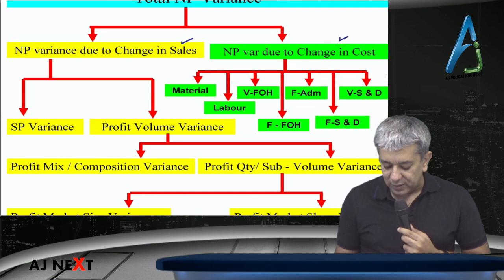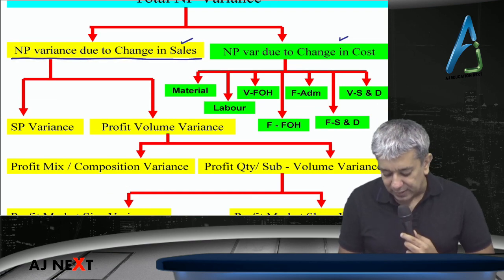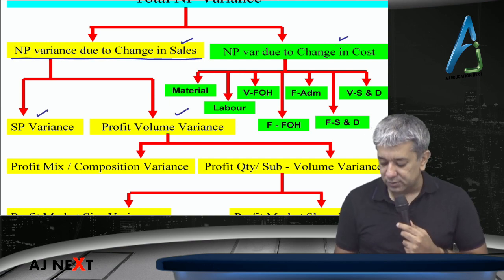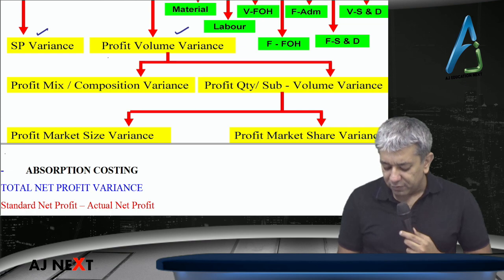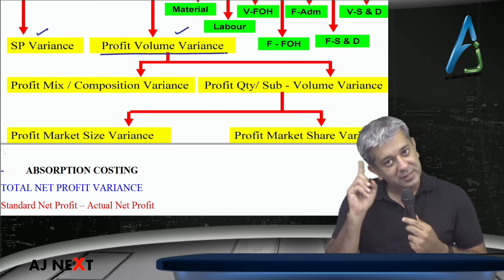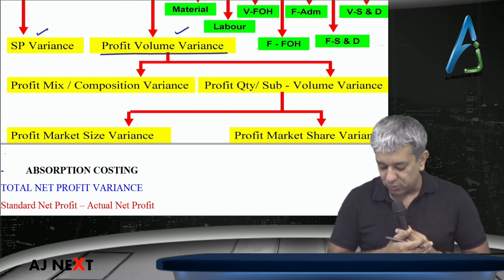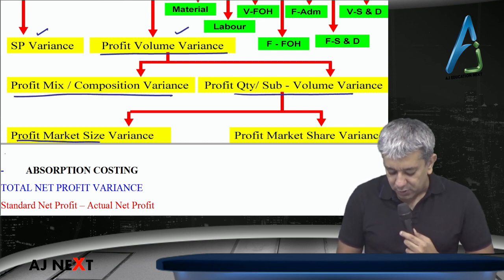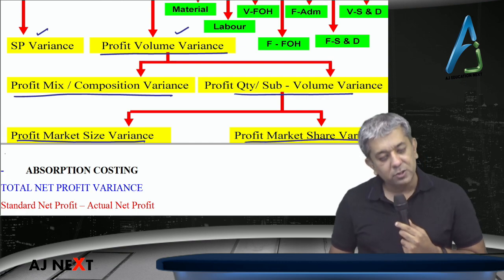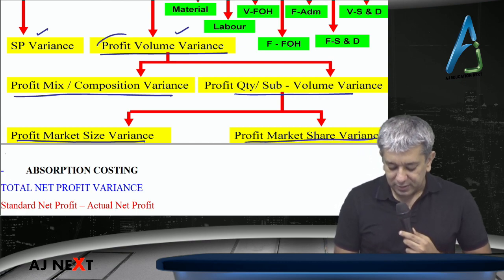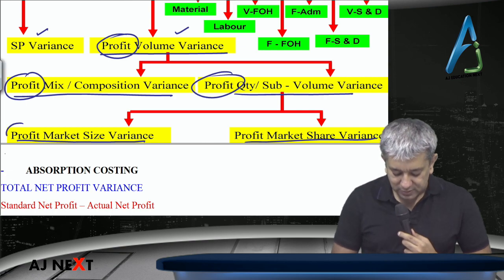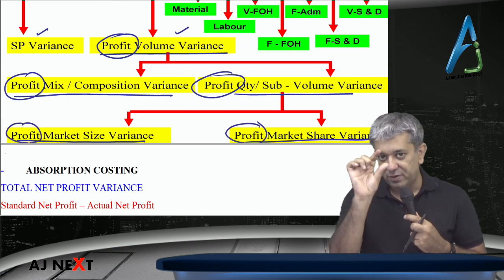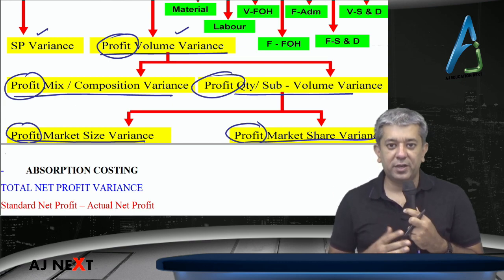Change in sales variance has two parts: selling price variance and profit volume variance. Profit volume variance is on similar lines to sales volume variance, but obviously something is different. It is broken up into profit mix and profit quantity variance, further broken up into profit market size and profit market share. Remember — all the names that were in sales variances are now here, but with the word 'profit' replacing 'sales'.